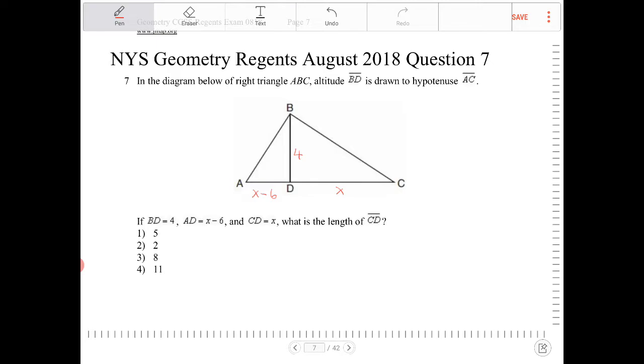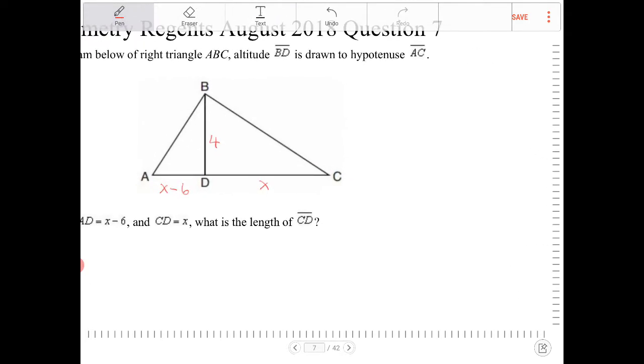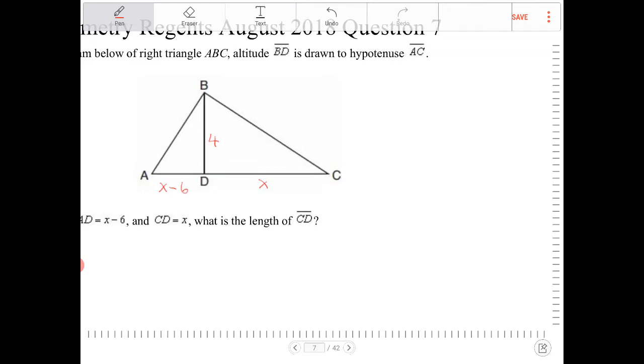This problem happens in every geometry regents, and every student should have knowledge of this kind of right triangle setup. If you have a right triangle and draw an altitude from the right angle down to the hypotenuse,